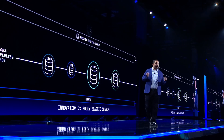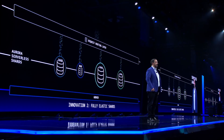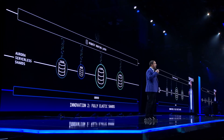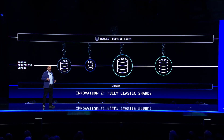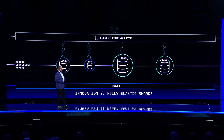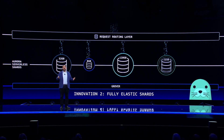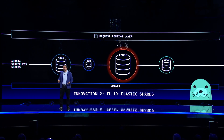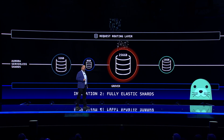Now, the second big challenge of operating a sharded database is managing all the shards. Because load varies across the shards, traditional sharded databases require considerable operational work to optimize performance and cost. Fortunately, every one of the Limitless Database shards runs on Caspian, and this allows each shard to scale up and down as needed, to a point.